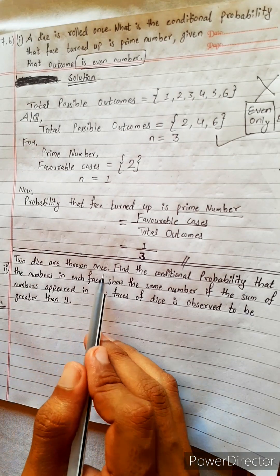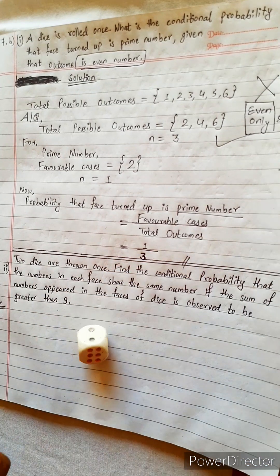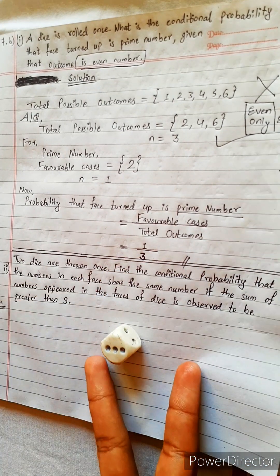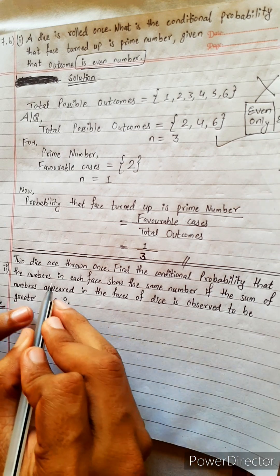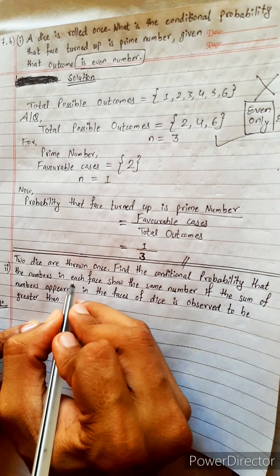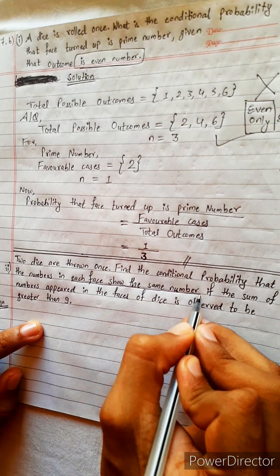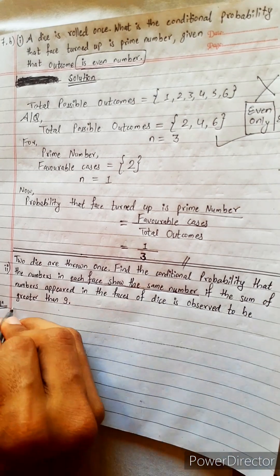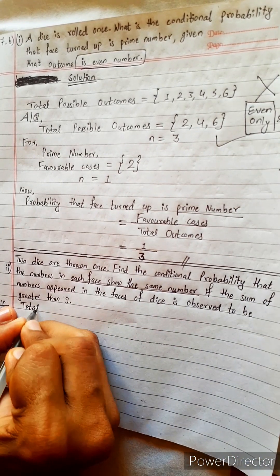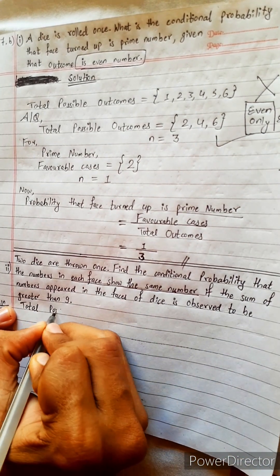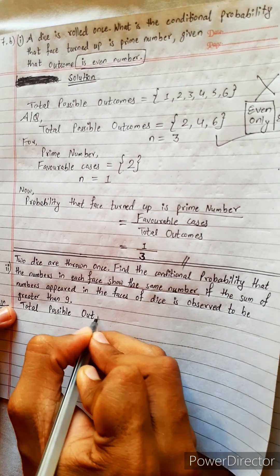Look here, two dice are thrown once. This is one dice, suppose another also dice. There are two dice. Each face saw the same number. First, total possible outcomes.